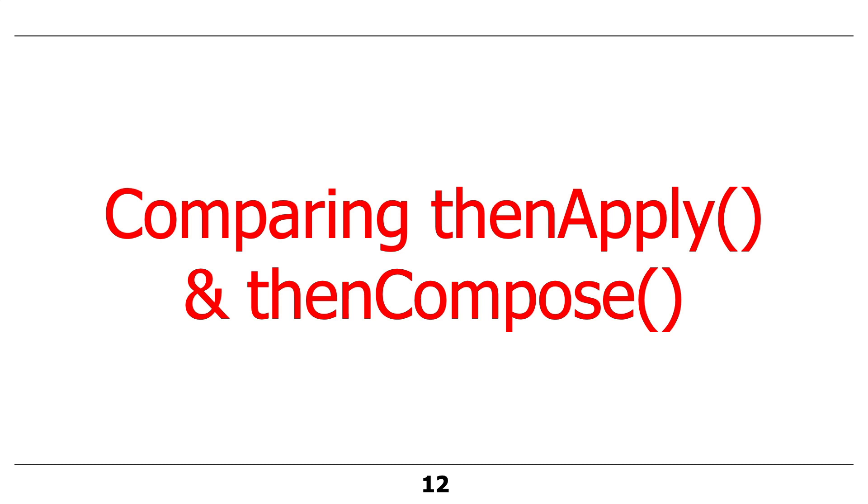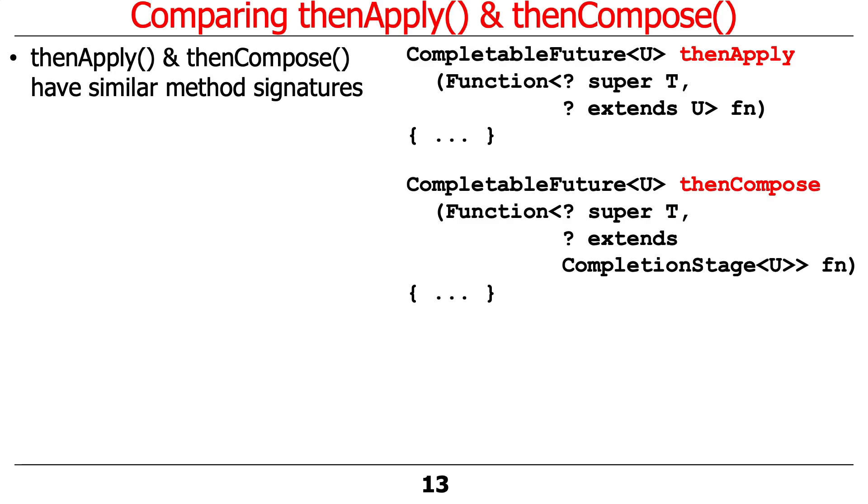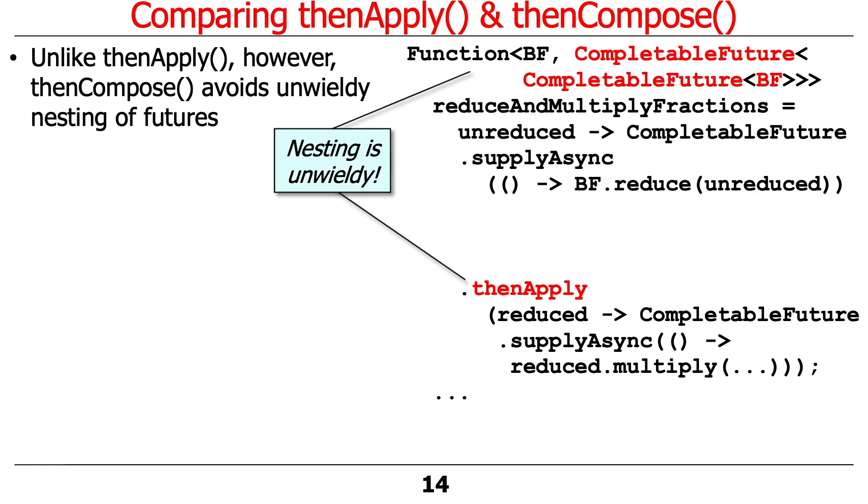So now that you've learned about thenApply, thenCompose, and thenAccept, let's talk about comparing and contrasting thenApply and thenCompose. They have very similar method signatures. If you look at these calls, they look almost identical. The main difference being that this one returns a completion stage.